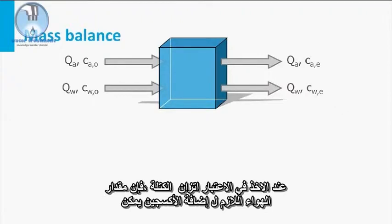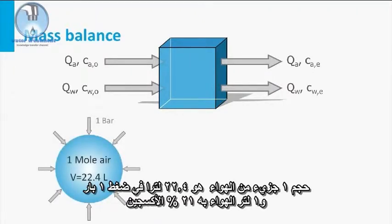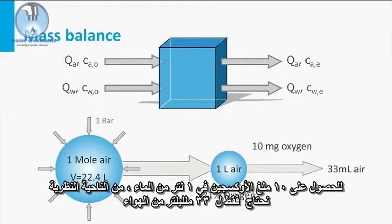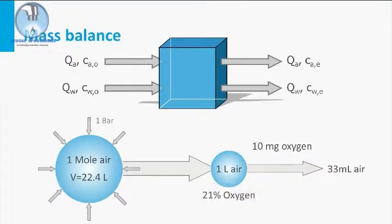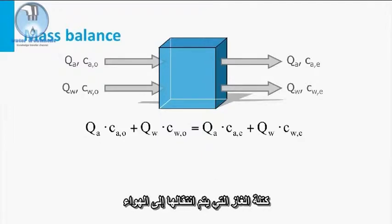When considering the mass balance, the amount of air needed for the addition of oxygen can be easily calculated. The volume of one mole of air is 22.4 liters at one bar. So, one liter of air with 21% oxygen is 0.3 grams of oxygen. To get 10 milligrams of oxygen in one liter of water, theoretically only 33 milliliters of air is needed. According to the mass balance, the gas mass that is removed from the water is equal to the gas mass that is transported to the air.